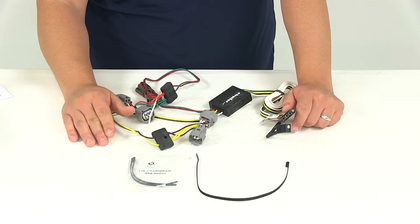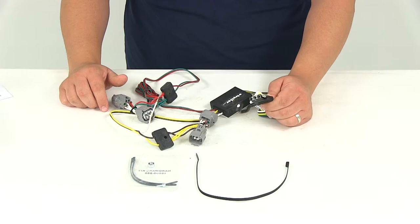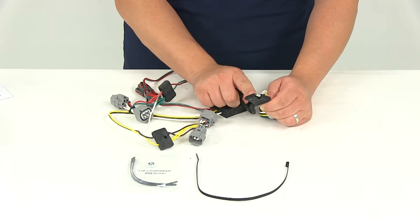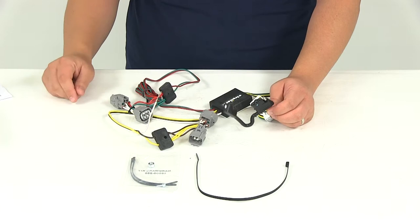Once you have everything connected and the installation is complete, the four-way flat trailer connector can be stored beneath the vehicle's rear down by the hitch. We do recommend a mounting bracket that's going to be sold separately. That's just going to keep the connector secure and up out of the way.